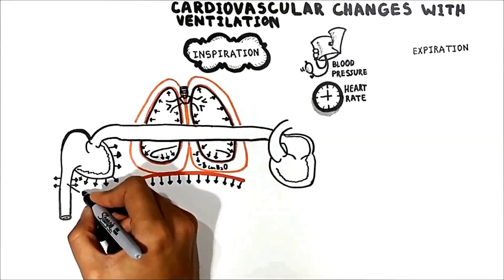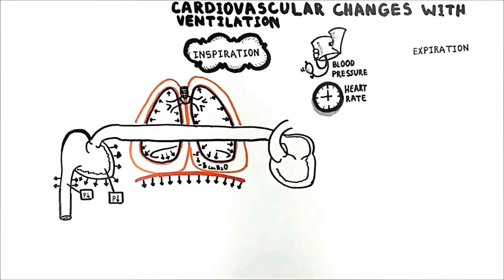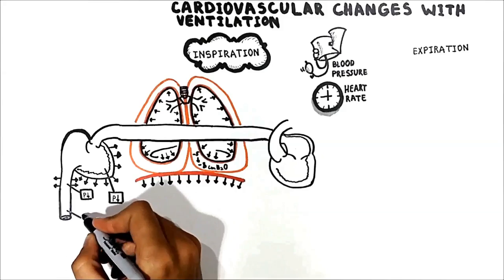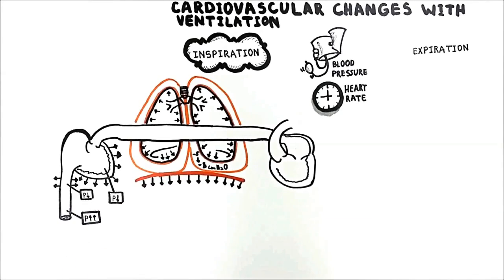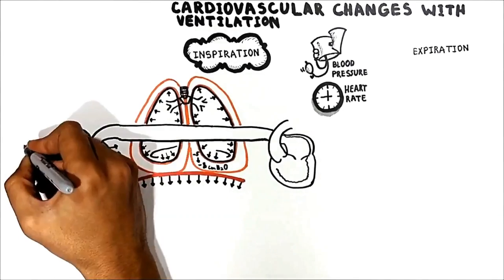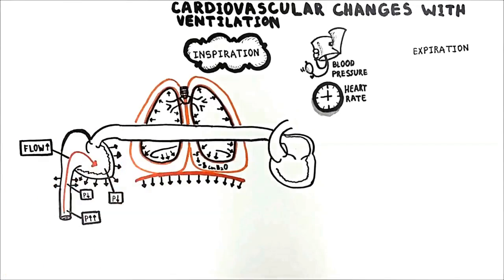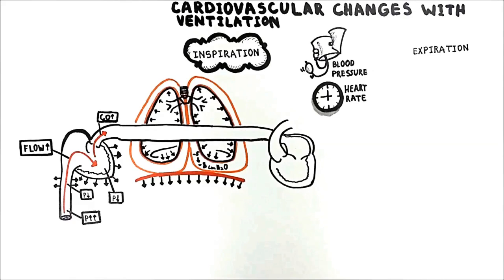This causes the pressure in the great veins as well as the right heart to fall. In this situation, the pressure in the lowest veins will be much greater than in the highest, thereby increasing the pressure gradient driving venous return to the right heart. As a consequence, the blood rushes into the heart faster — the flow increases. This means that systemic venous return increases, which in turn increases the right ventricular output via the Frank-Starling mechanism.